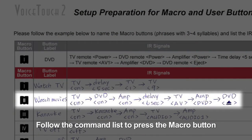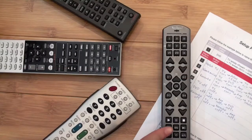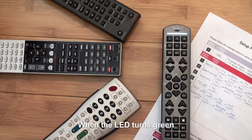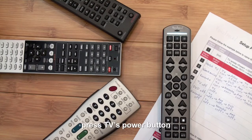Follow the command list to press the macro button. When the LED turns green, press TV's power button.